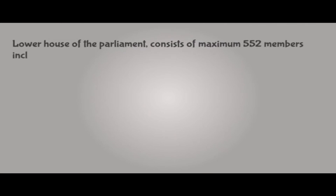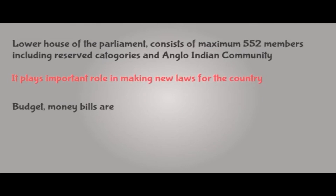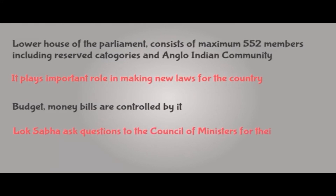So, the Lok Sabha is the lower house of Parliament and consists of a maximum of 552 members, including reserved categories and the Anglo-Indian community. It plays an important role in making new laws for the country. Budget and money bills are controlled by it. Lok Sabha can ask questions to the Council of Ministers for their actions and controls them.